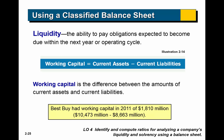Liquidity is the ability to pay our short-term obligations. Working capital is not technically a ratio, but it's current assets minus current liabilities. Current assets are those we expect to convert to cash or use up within the next year; subtracting current liabilities tells us how much money will be available after paying short-term debts. For Best Buy, they had $10,473 million in current assets and $8,663 million in current liabilities, leaving $1,810 million in working capital.